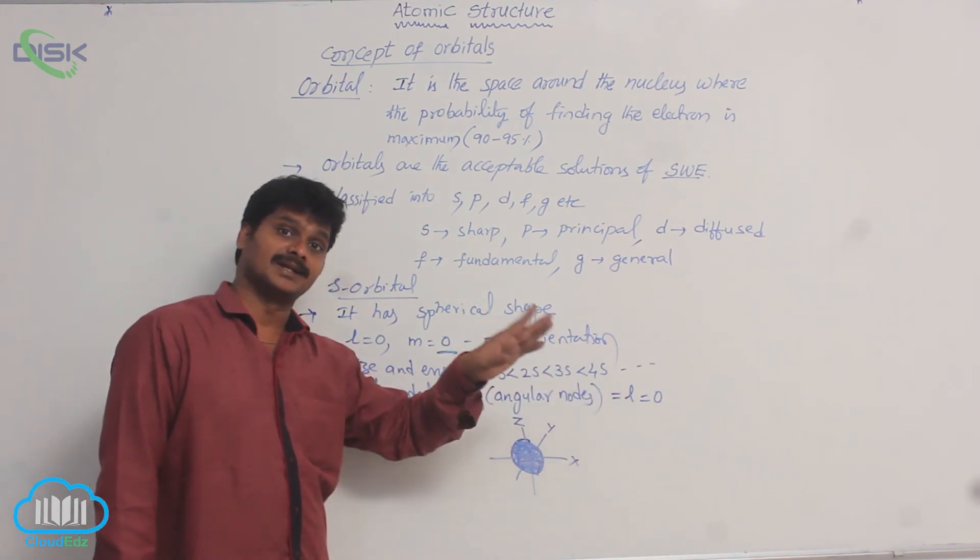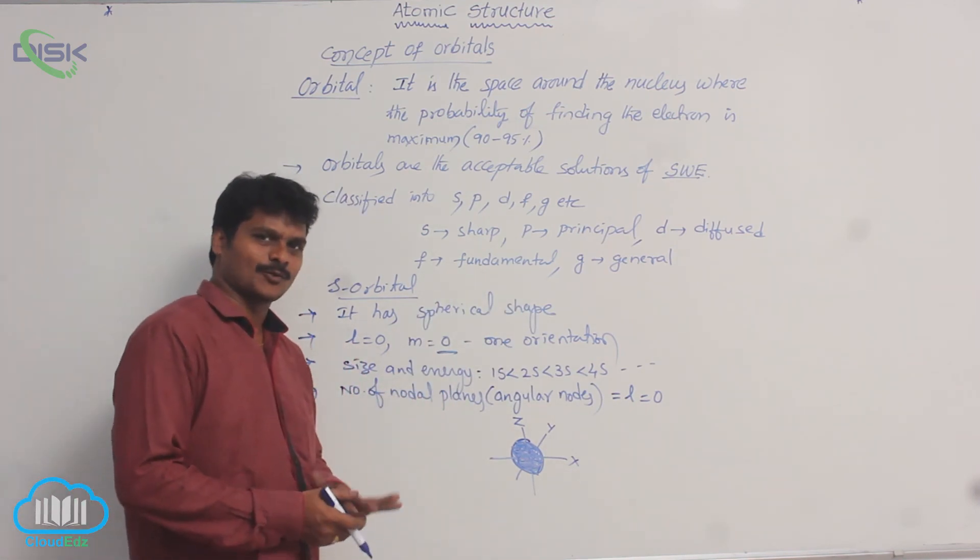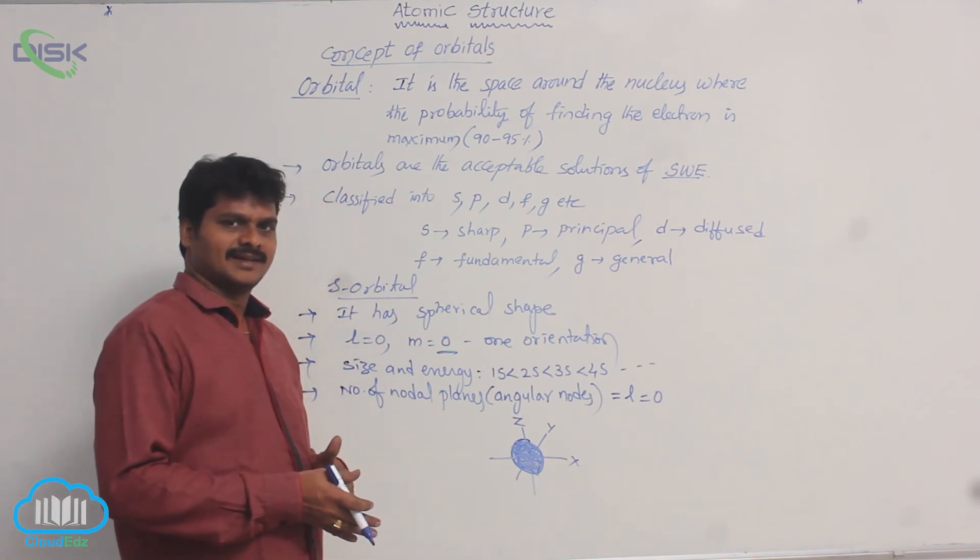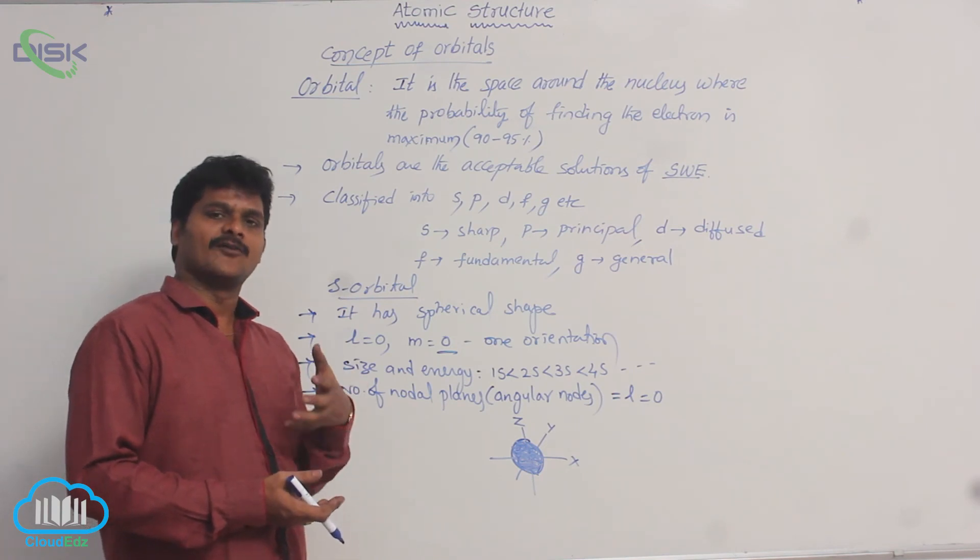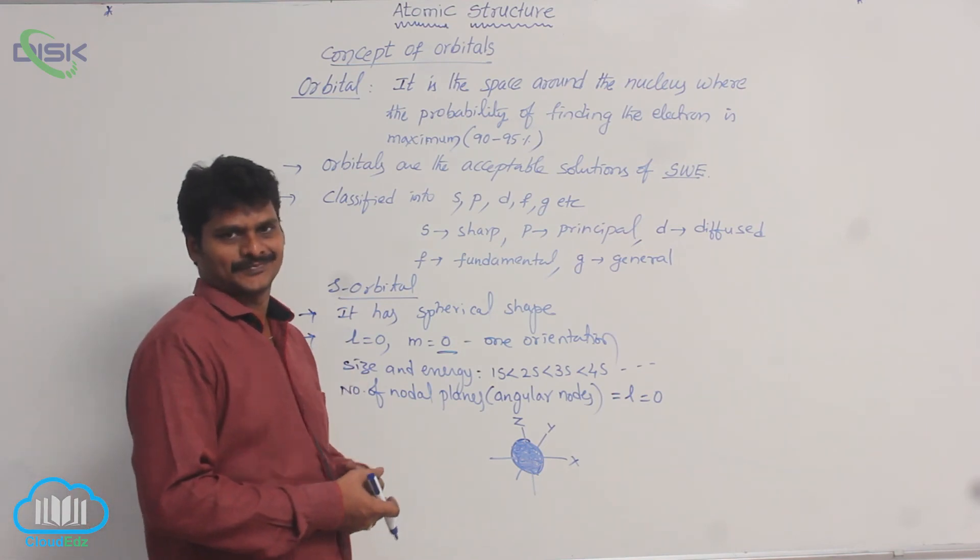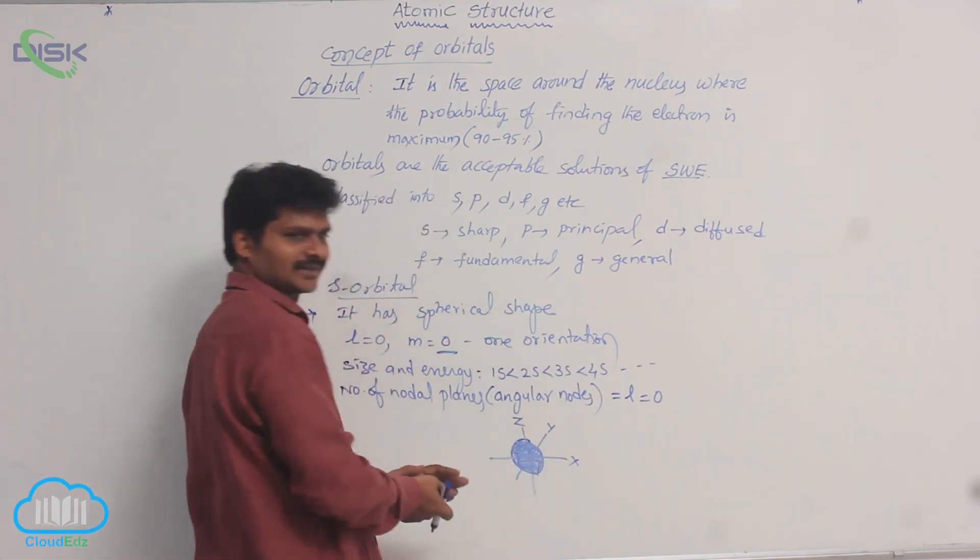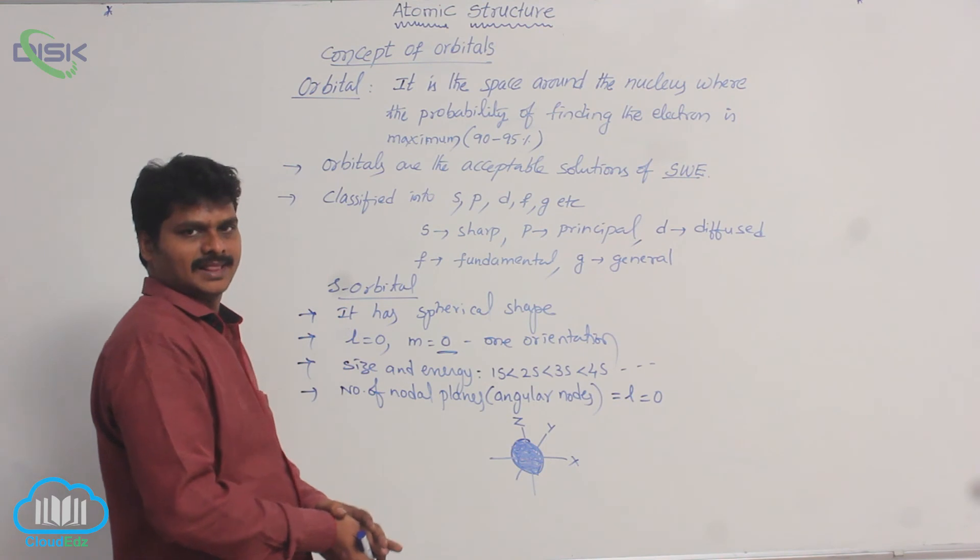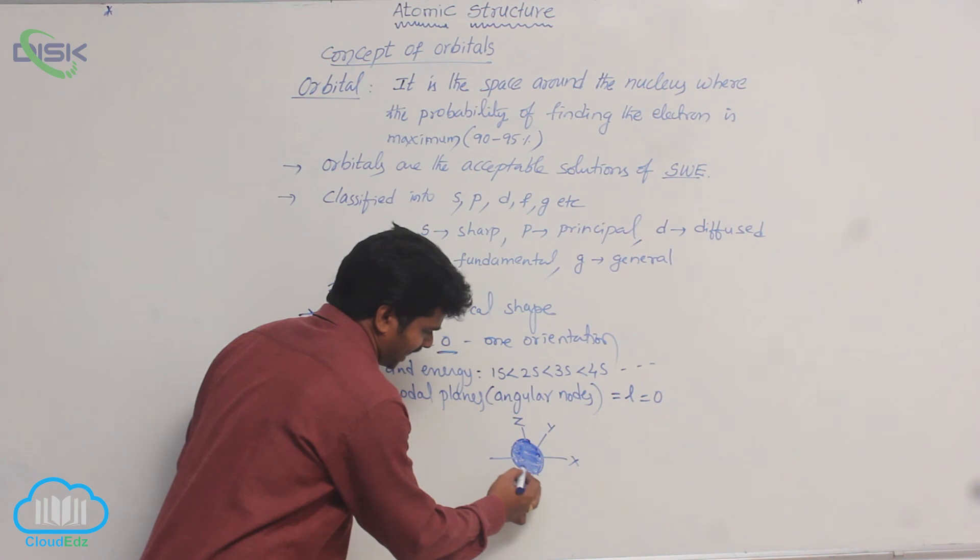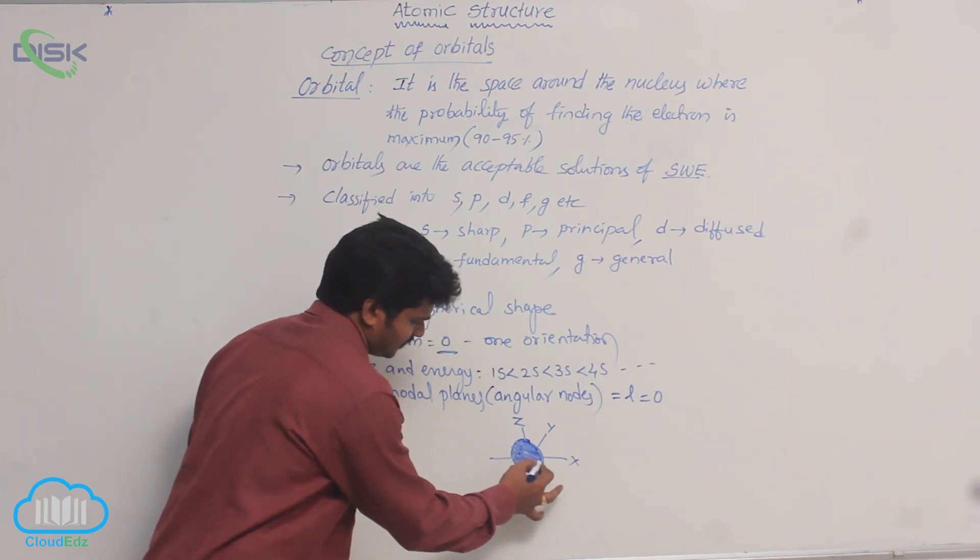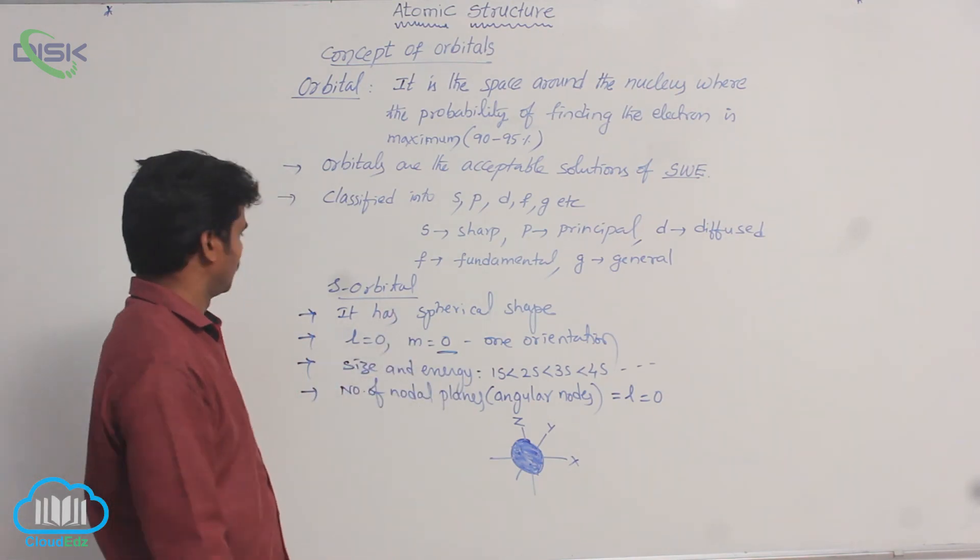So number of nodal planes possible for an orbital equals to formula L. So azimuthal quantum number is also used for calculating number of nodal planes. What is nodal plane? It is the plane in which the probability of finding electron is 0. So if you draw a plane in any direction, that will touch the sphere. That's why no plane can be drawn without touching it. That's why its number of nodal planes is 0 for S orbital.